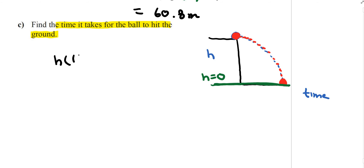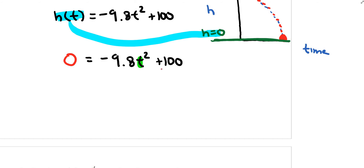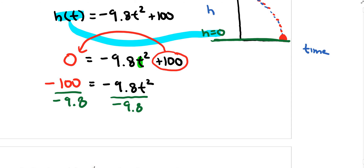Given h(t) = -9.8t² + 100, we set the height equal to 0 when the ball hits the ground: 0 = -9.8t² + 100. Our goal is to solve for t. Moving the positive 100 to the other side gives -100 = -9.8t².